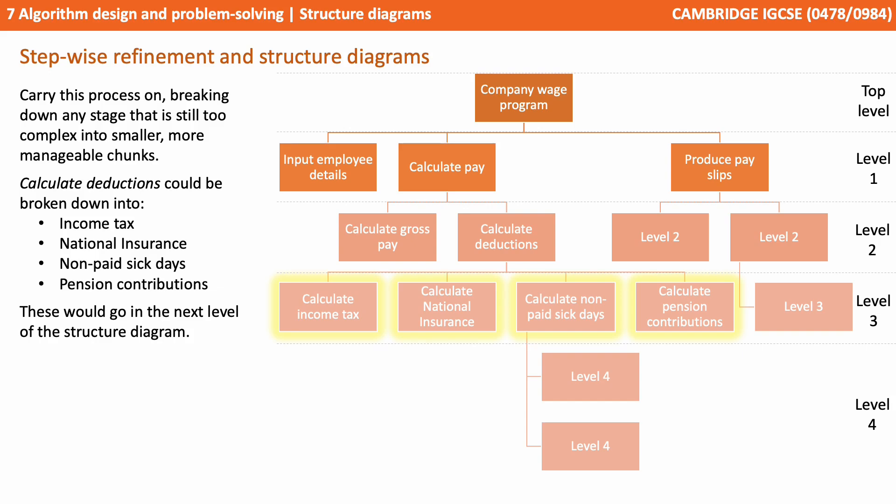We carry on this process, breaking down any stages that are still too complex into smaller, more manageable chunks. Calculate deductions, for example, could be broken down into income tax, national insurance, non-paid sick days, and pension contributions. These would go in the next level down on the structure diagram.